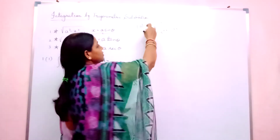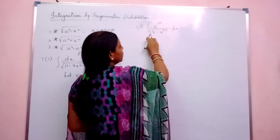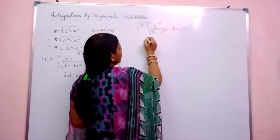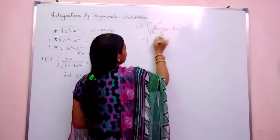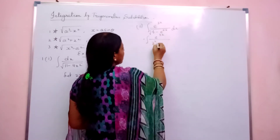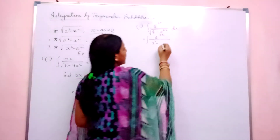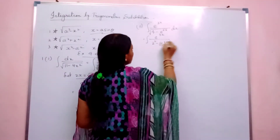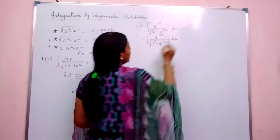The second question is integration of e to the power 3x divided by root of 4 minus e to the power 6x. Can I write it as integration of e to the power 3x divided by 2 squared minus e to the power 6x, which equals e to the power 3x whole square, then whole root dx?